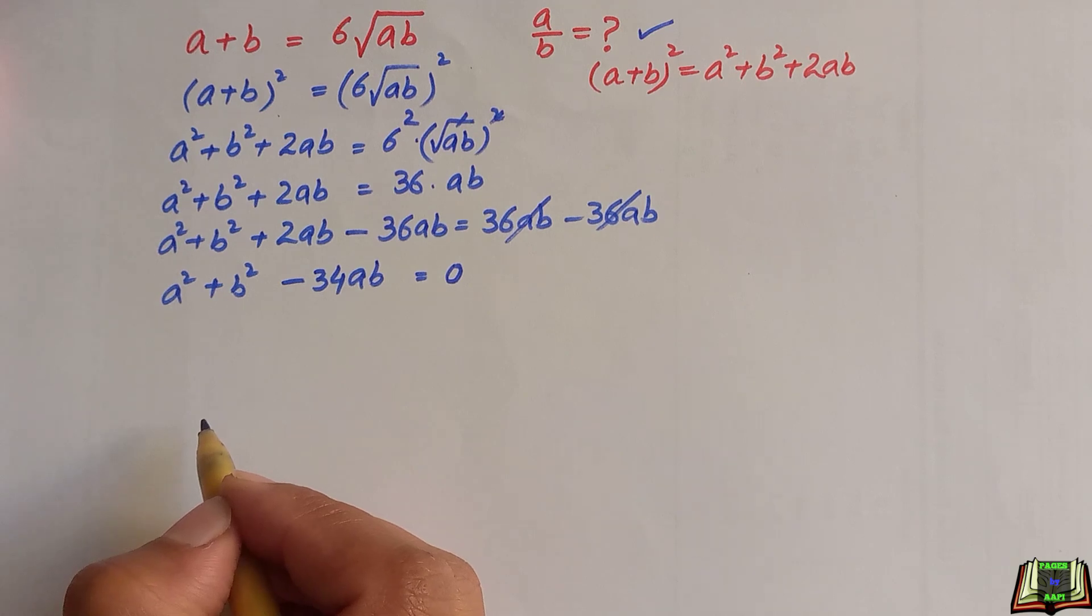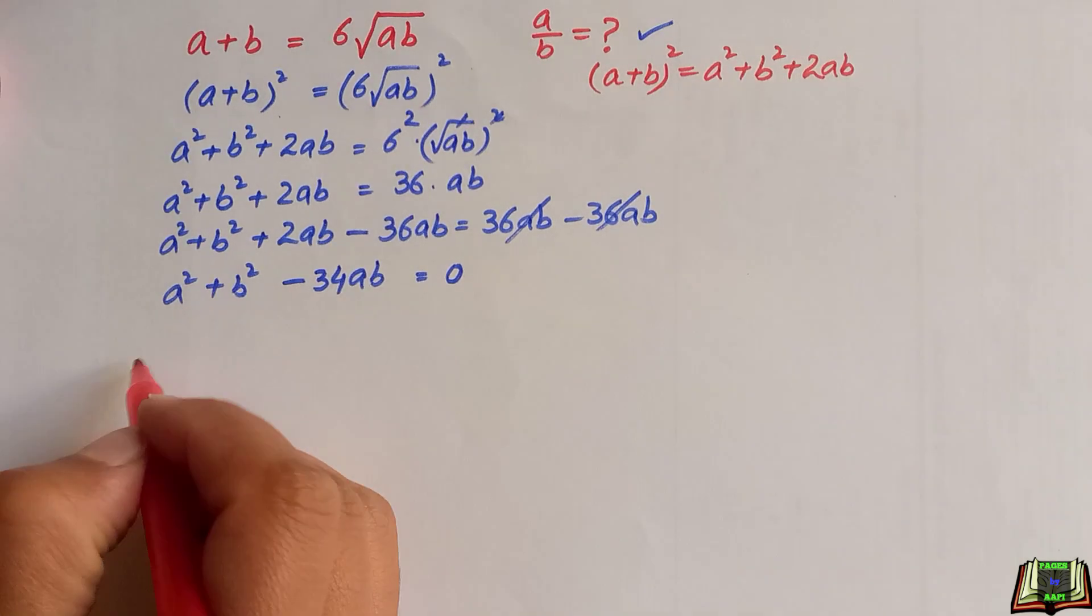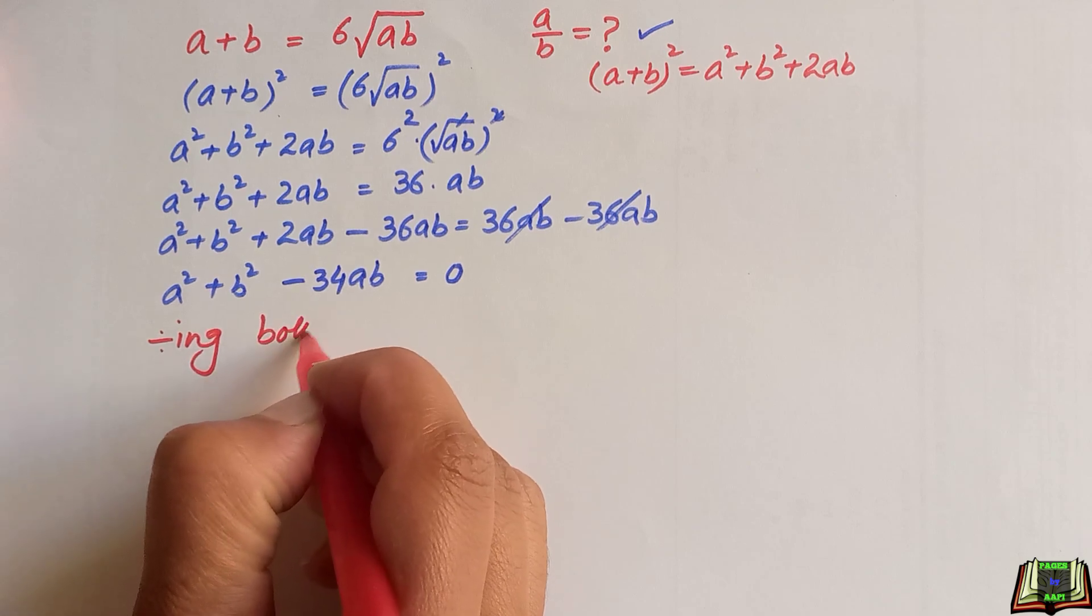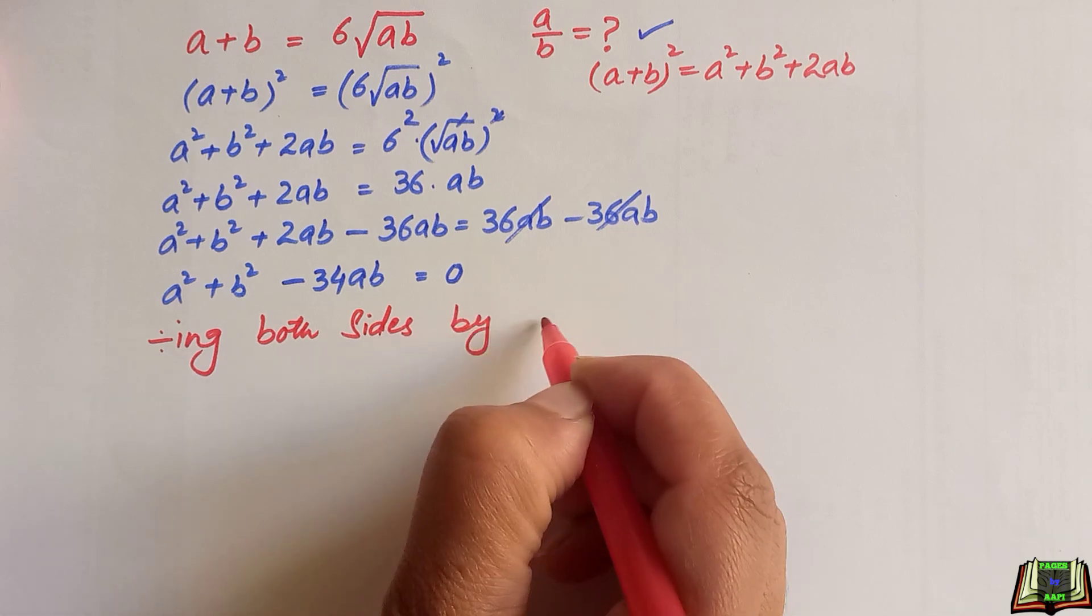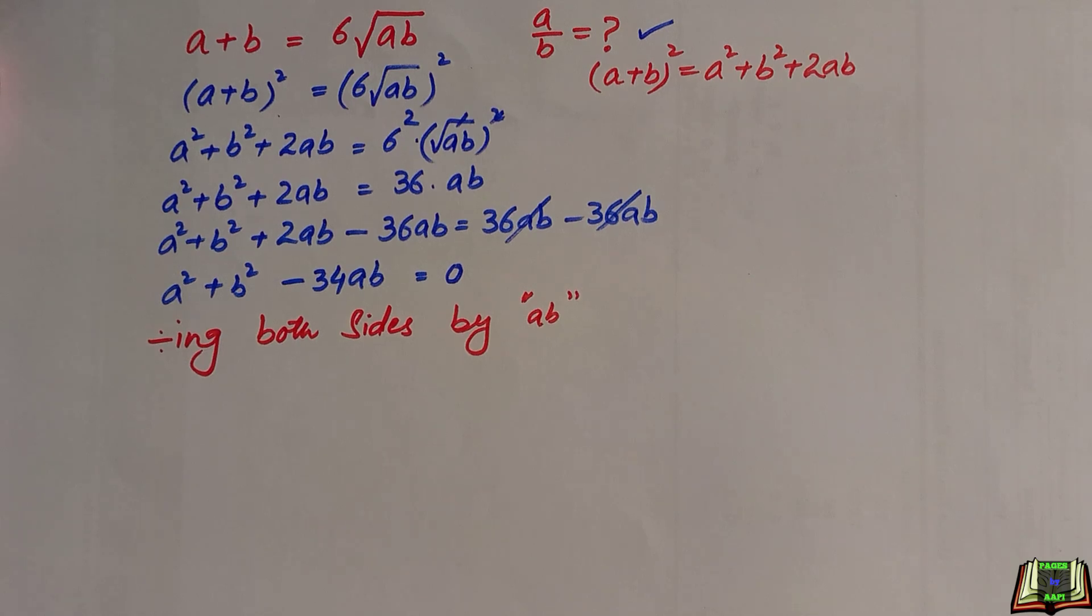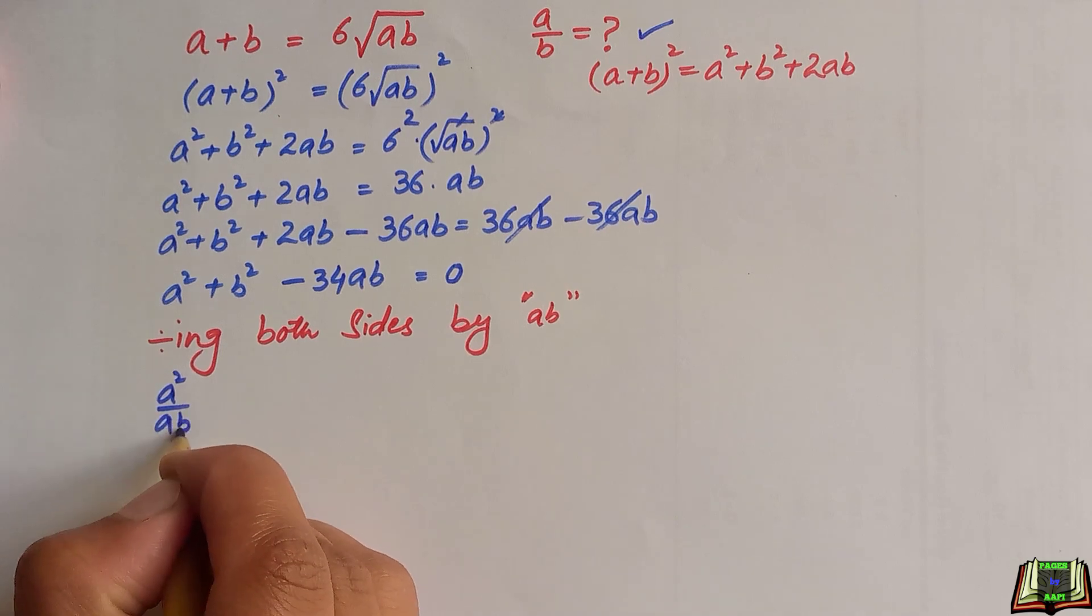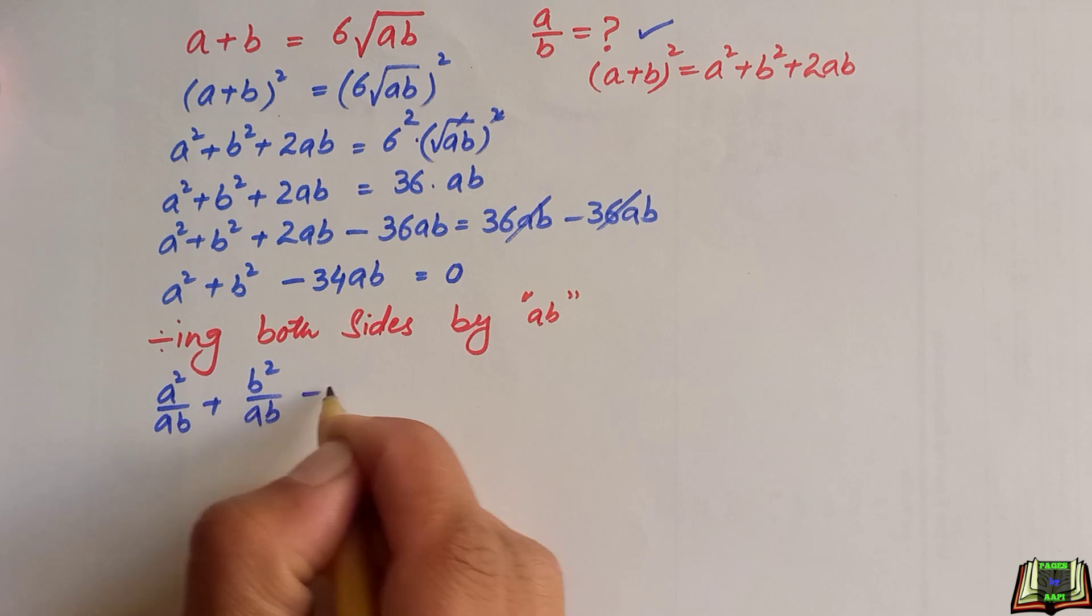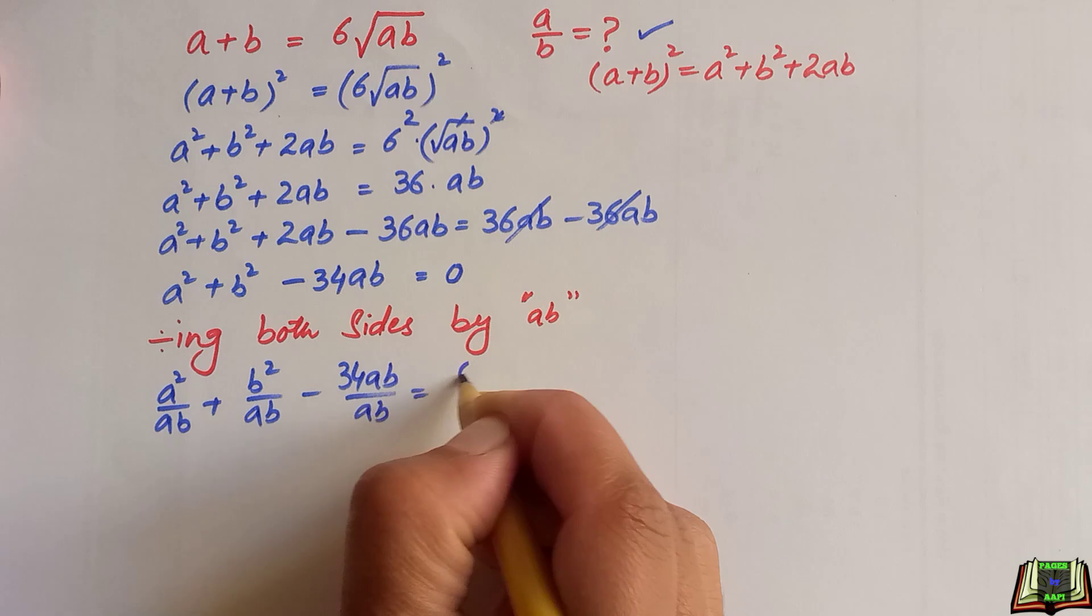Here at this step, we are going to divide this equation by ab. So, dividing both sides of this equation by ab we get a square over ab plus b square over ab minus 34ab over ab and on right hand side, 0 divided by ab.